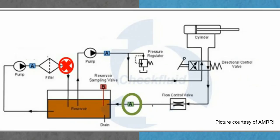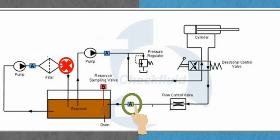A sample should not be taken immediately after a filter, as it would reflect filter efficiency rather than the actual oil condition in the equipment. Return lines in hydraulic systems are generally an excellent sampling point — ideal for debris information. Oil reservoirs in hydraulic and circulating systems are not a good sampling location, as metal particles get diluted in the tank and wear goes undetected.